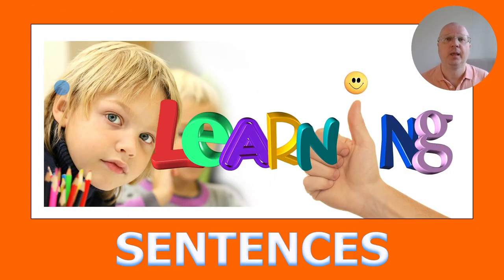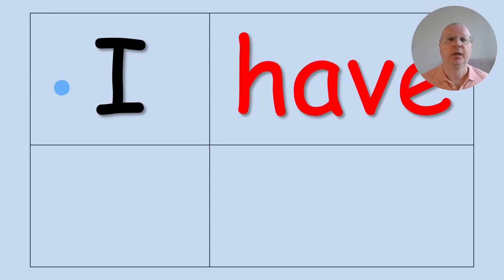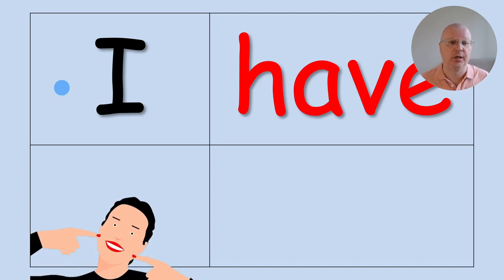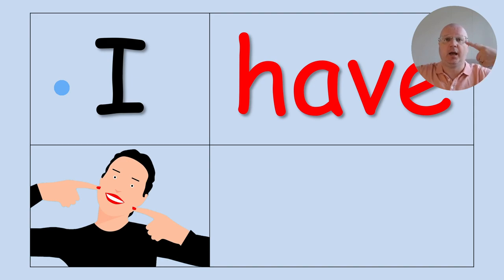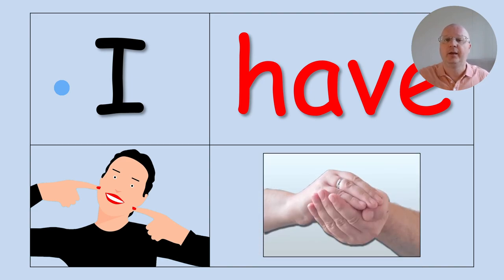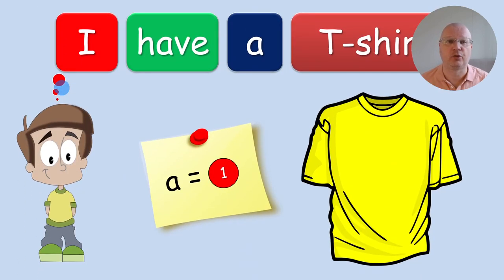Sentences. In this part of the lesson, you introduce a sentence structure. And I always combine it with a TPR action. So for I, I show this, I, or you can do this, I. And for have, I have this, half, I have. That's what you do. And we drill sentence structures.